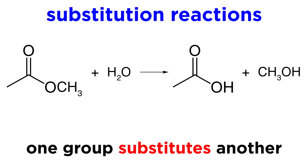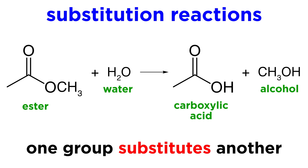Then we get to substitution reactions. This is where one group on a molecule is swapped out for another. Here is an example involving an ester and water, and we can see that OCH3 has swapped places with OH, yielding two new products. So OH has substituted in the place of OCH3.